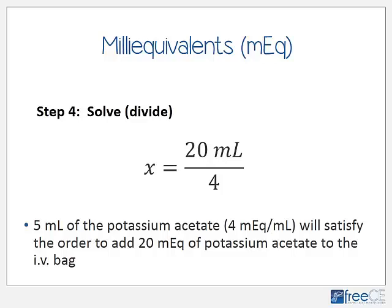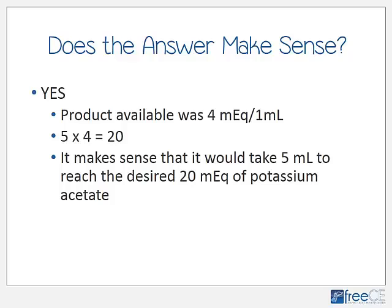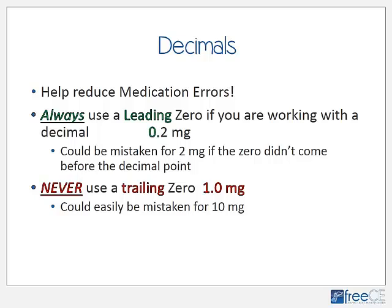Now the last step: does the answer make sense? If your calculation gave you something like 0.5 mL, you'd know it was wrong — there are only 4 milliequivalents in 1 milliliter, so less than 1 mL couldn't possibly equal 20 milliequivalents. Five milliliters makes sense because 5 times 4 equals the desired 20 milliequivalents.